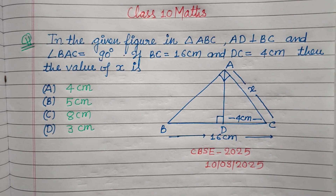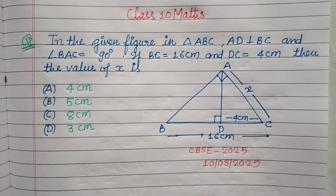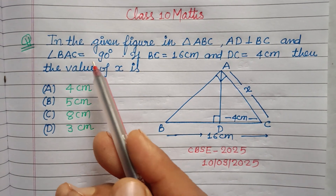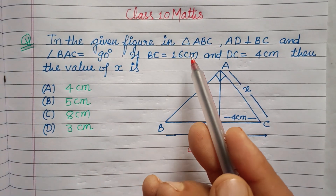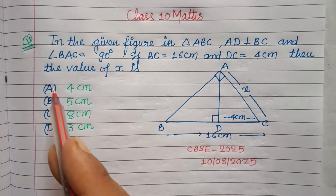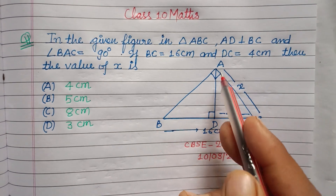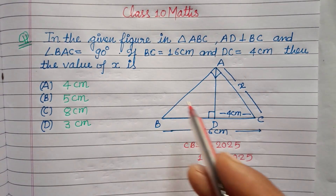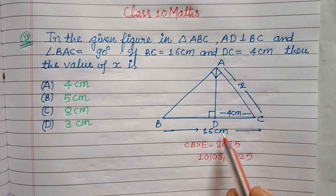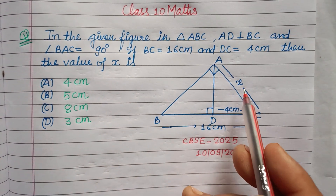Hello viewers, warm welcome to this YouTube channel. This question is from the CBSE board exam 2025. In the given figure, in triangle ABC, AD is perpendicular to BC, angle BAC is 90°. If BC is 16 cm and DC is 4 cm, then find the value of X.